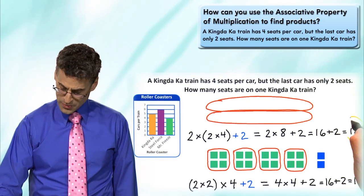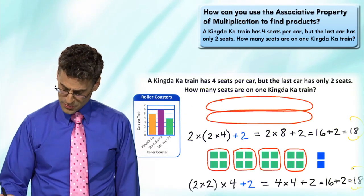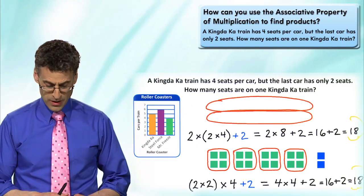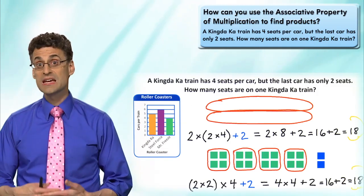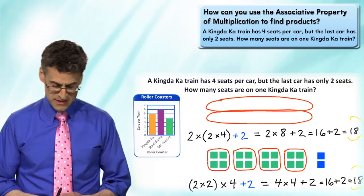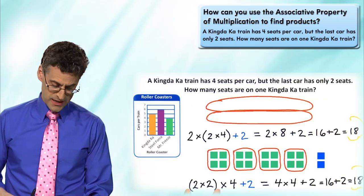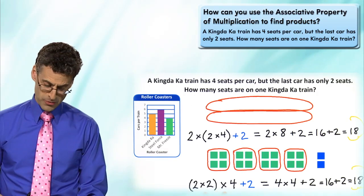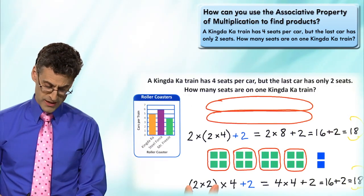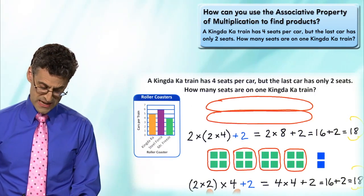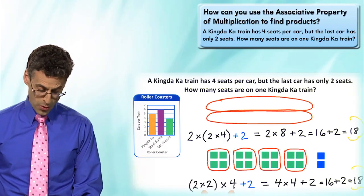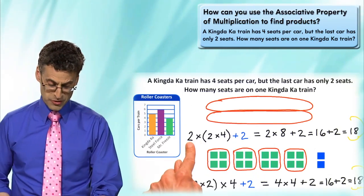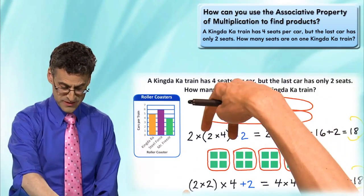We get eighteen this way, and we got eighteen the other way. That's because we're seeing a wonderful example of associativity in multiplication. When you have three numbers to multiply, you can either multiply the first two first and then multiply by the last one, or slide the parentheses over - like a roller coaster - and do that multiplication first, then multiply by two.